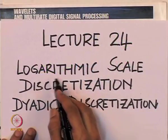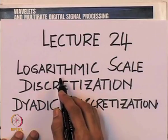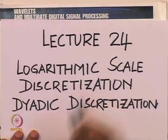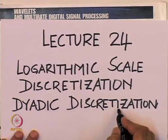We first addressed the question of discretizing the scale and noted what happens when we change the scale. In this lecture, we will build on this discretization of scale in greater depth, considering one particular kind — namely dyadic discretization. I intend to talk about logarithmic scale discretization in general and dyadic discretization in particular.